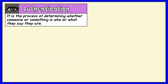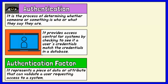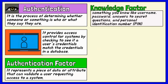Authentication is the process of determining whether someone or something is who or what they say they are. Authentication technology provides access control for systems by checking to see if a user's credentials match the credentials in a database of authorized users. An authentication factor represents a piece of data or attribute that can validate a user requesting access to a system.